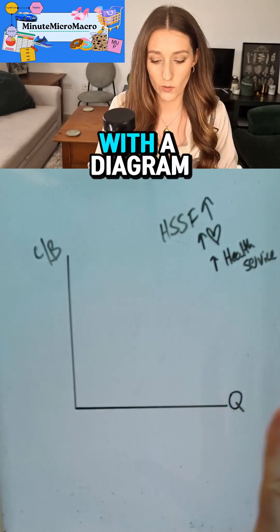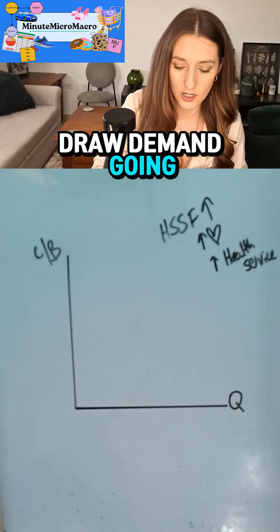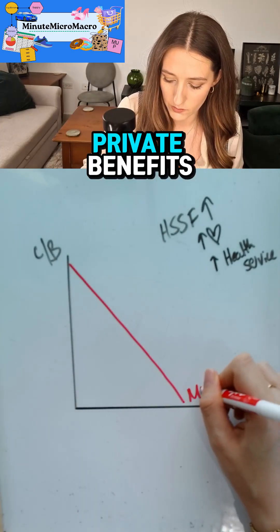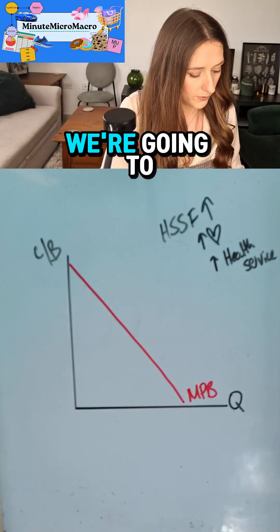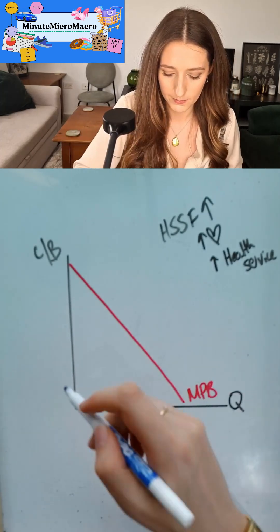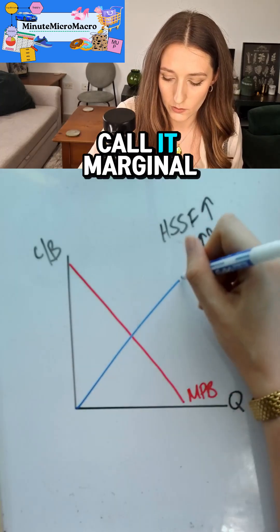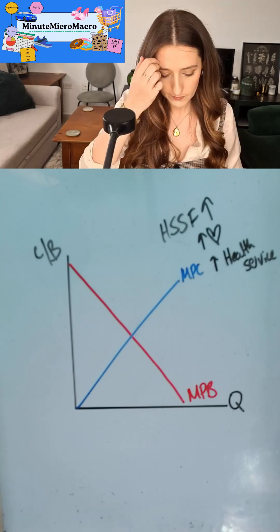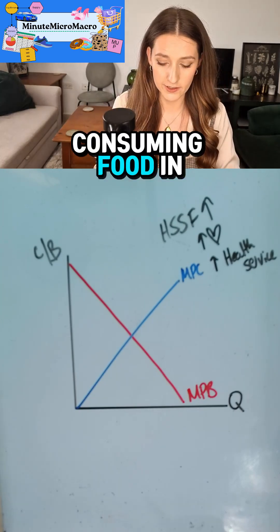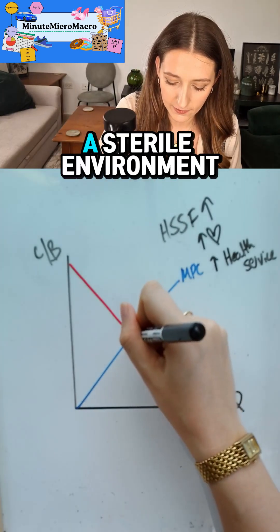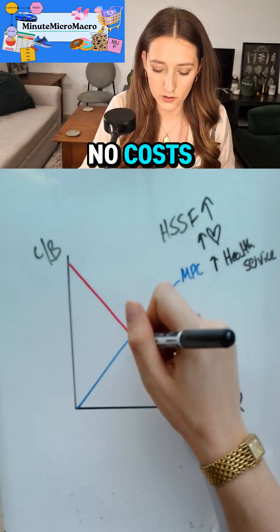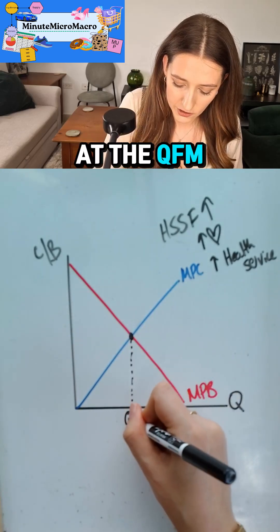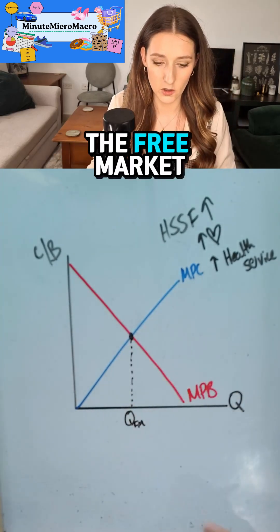So how do we show this with a diagram? We're going to draw demand going down, but we're not going to call it demand — we call it marginal private benefits. We're going to draw supply going up, but we're not going to call it supply — we call it marginal private costs.